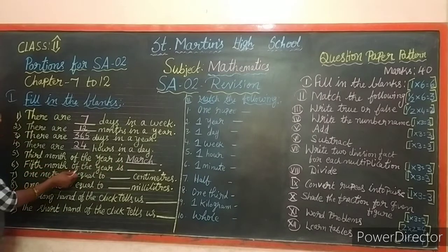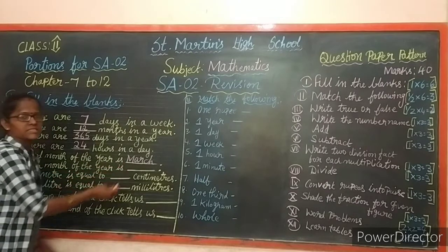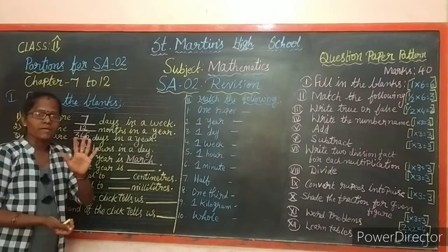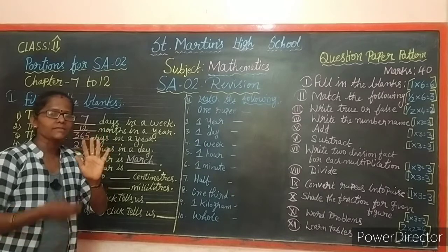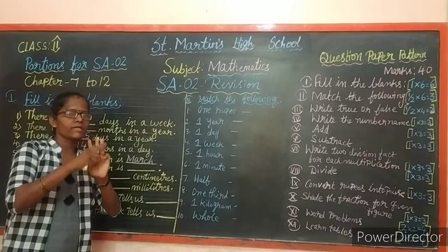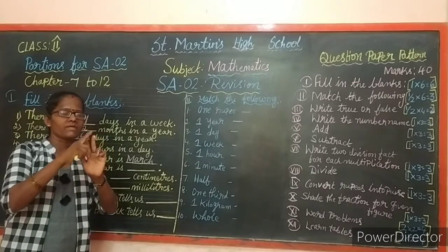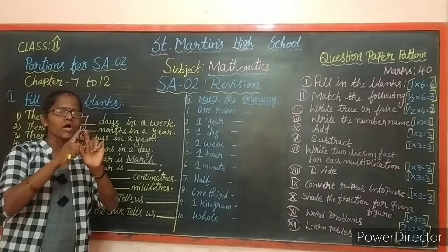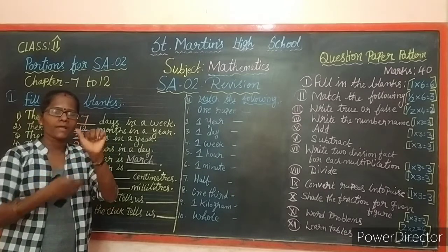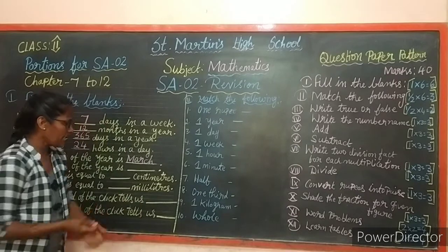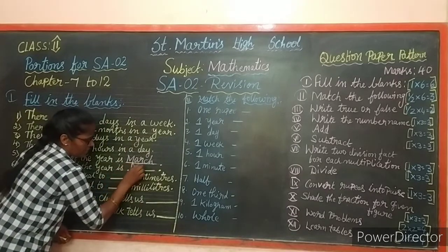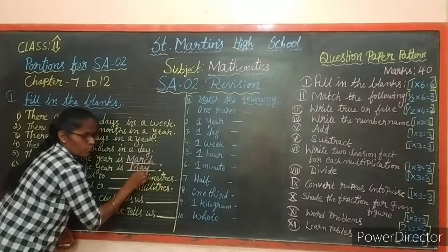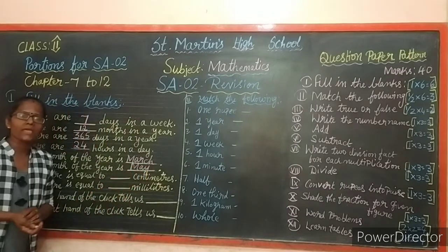Next: the fifth month of the year is dash. Let us count - January, February, March, April, May. The fifth month of the year is May.